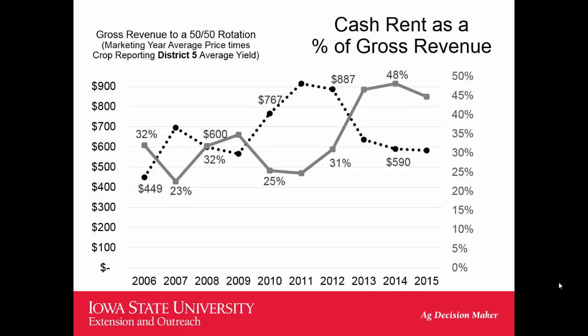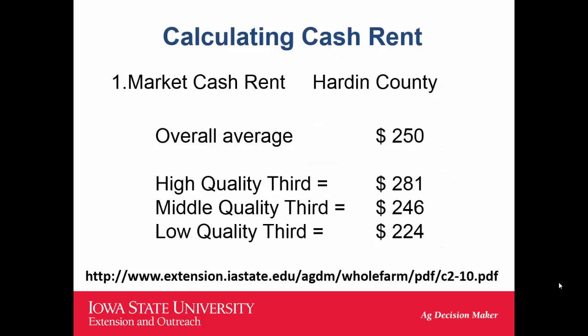Looking again at District 5, a very similar pattern — peaked out at almost 48%, still above 40%, but moving lower. When we take a look at our rental rate survey, you can go in and at the bottom of the page there's a PDF you can download. You can take a look at your county and follow through as we go through the next few slides.